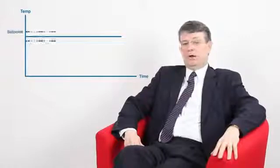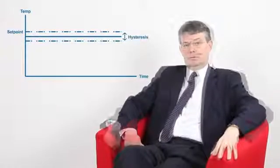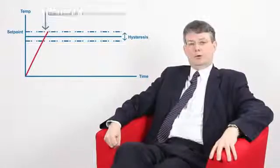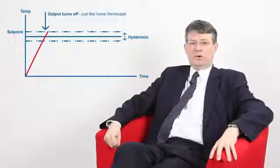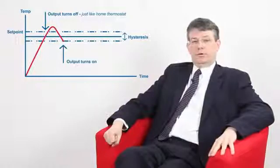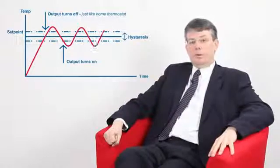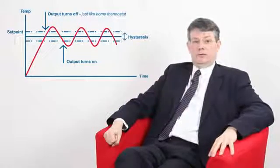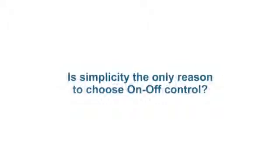We've seen that proportional control will give better stability in the process, so you might wonder why anyone would ever use on-off control. A proportional controller must always be tuned to the process and this can be a little bit daunting for users. If the process doesn't require a high level of stability, the simplicity of on-off control can sometimes be attractive. Unlike proportional control, on-off control only has as a maximum one parameter to adjust. This is the on-off differential.